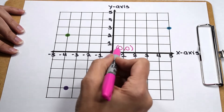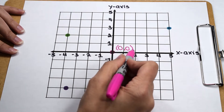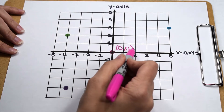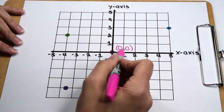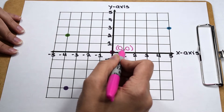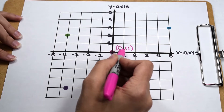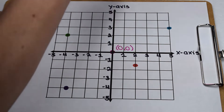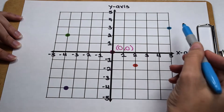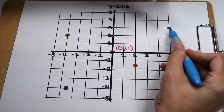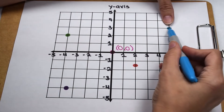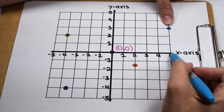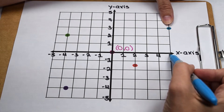Remember, when working with ordered pairs, our coordinates are always inside a set of parentheses with a comma separating the x and the y values. Let's come around and start here in quadrant one. To determine the location of this point, we start by seeing where it lines up on our x-axis.